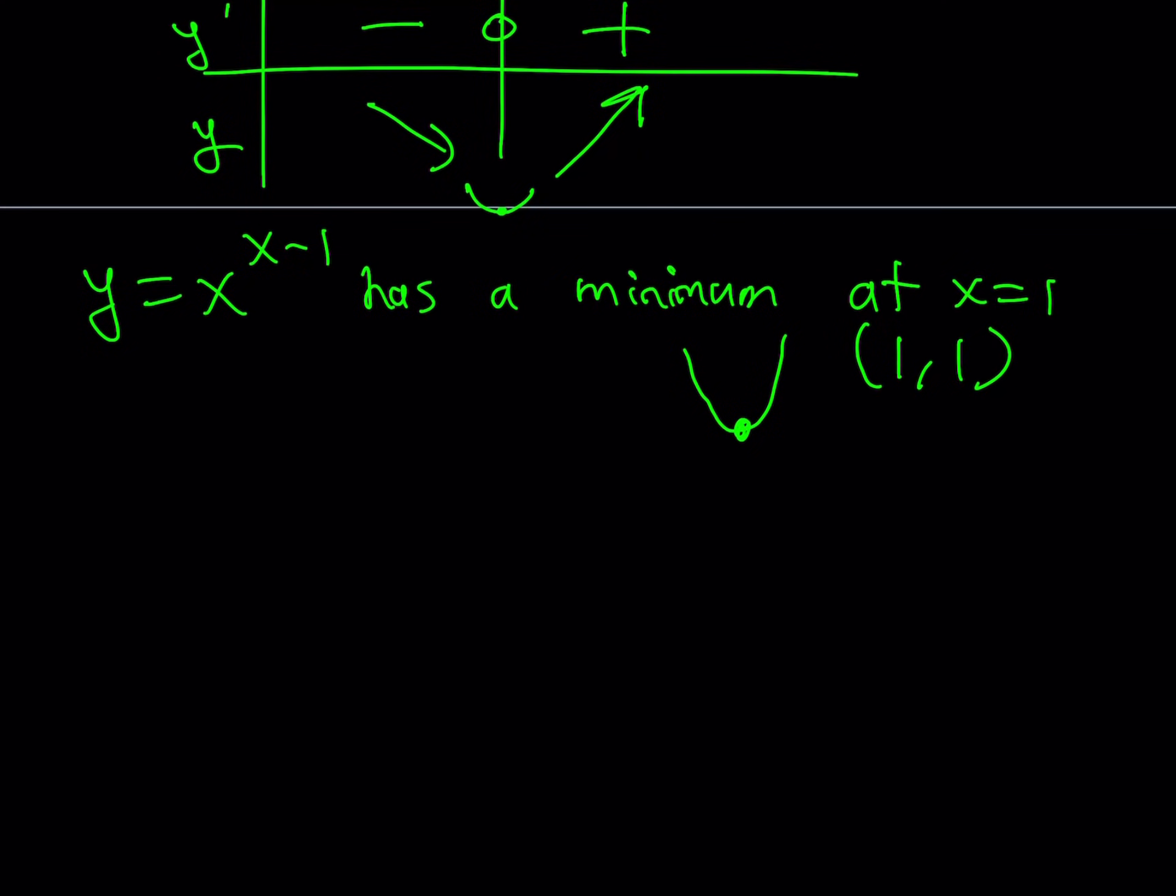Now, here is the thing. We are trying to solve the equation x to the power x minus 1 is equal to 1, and we see that at y equals 1, we have a minimum, but at the same time, that means that the line y equals 1 is tangent to this graph at x equals 1.